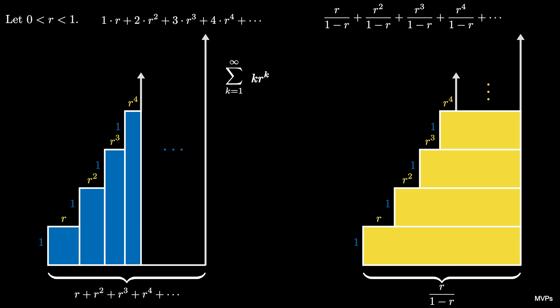Thus we have that the sum from 1 to infinity of k r to the k is equal to the sum from 1 to infinity of r to the k over 1 minus r.